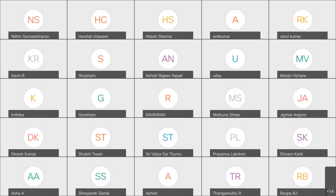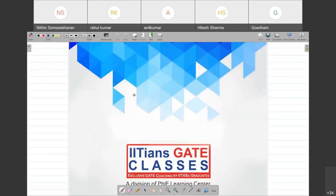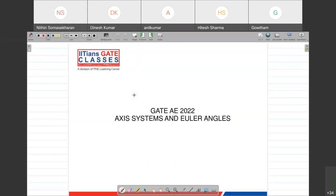Let's begin - let me share my screen. Please tell me if my screen is visible. We'll quickly discuss a bit on axis systems, the different axis systems, and then the Euler angles from an aircraft stability point of view.